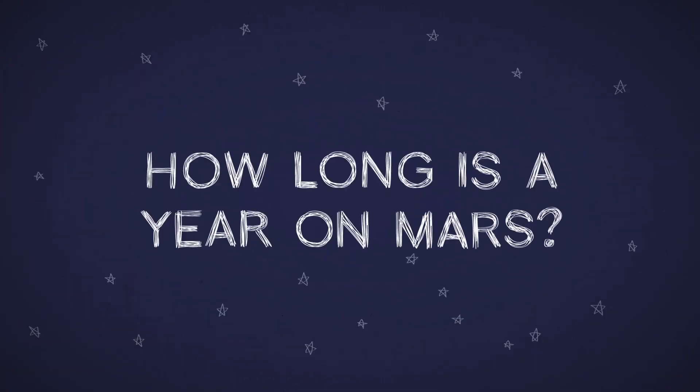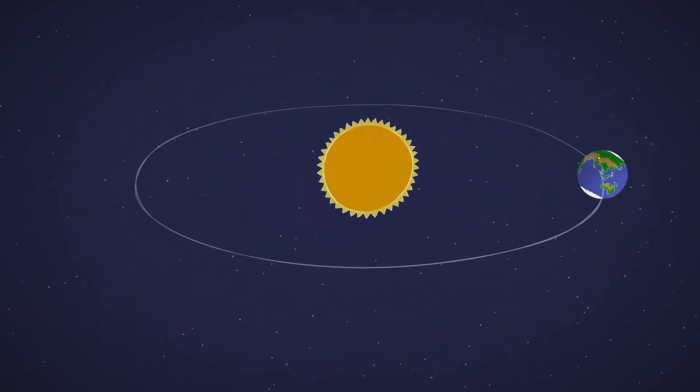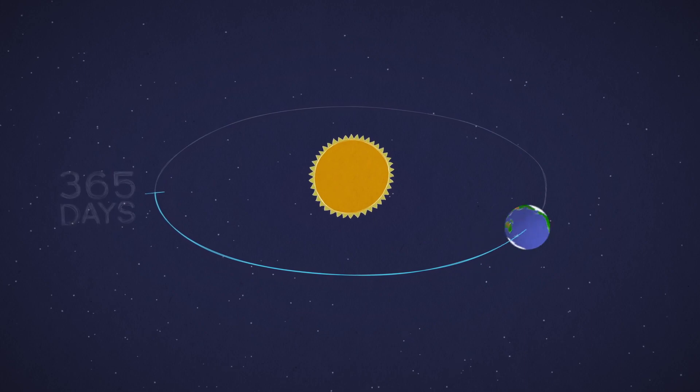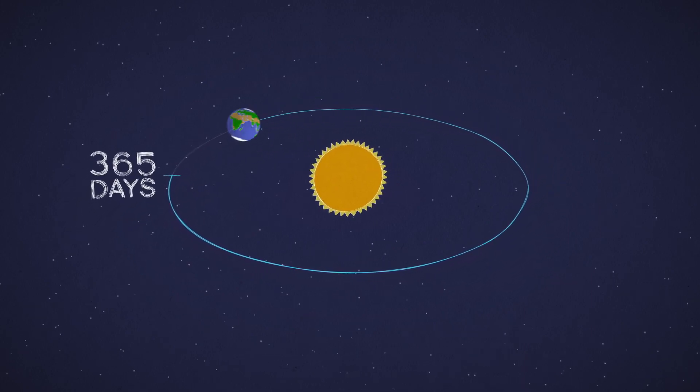How long is a year on Mars? The Earth zips around the Sun at about 67,000 miles per hour, making a full revolution in about 365 days, one year on Earth.